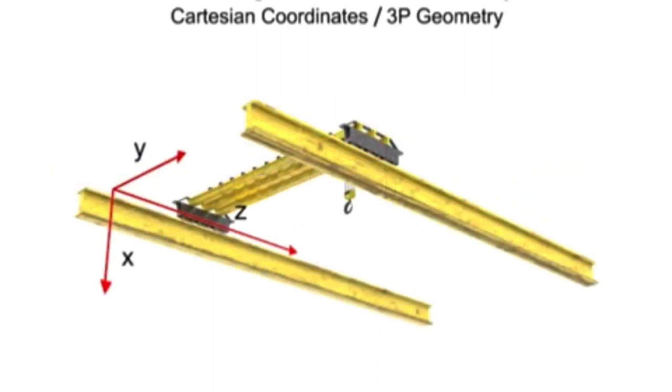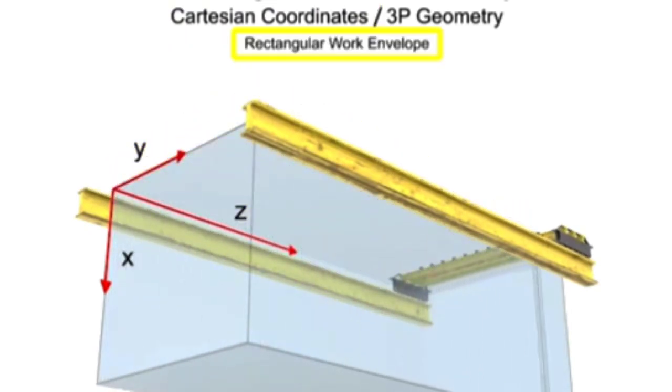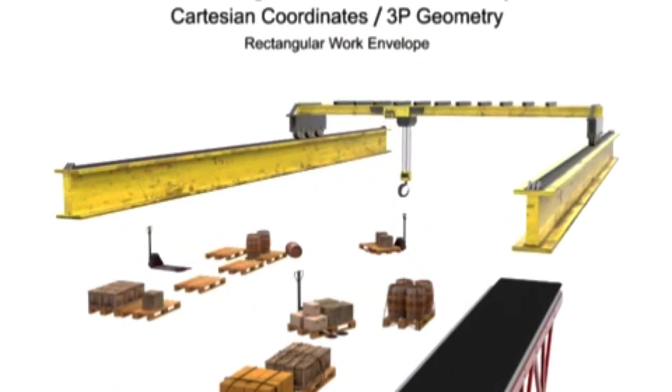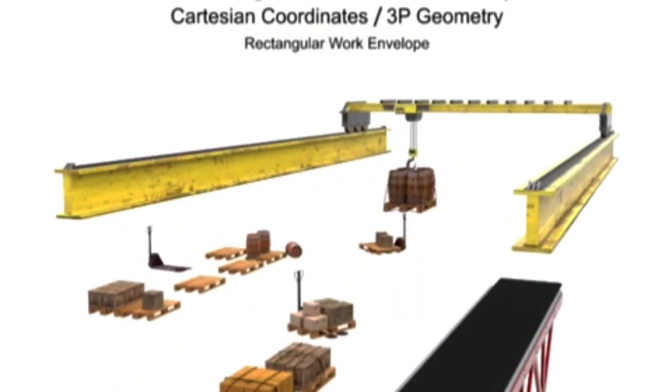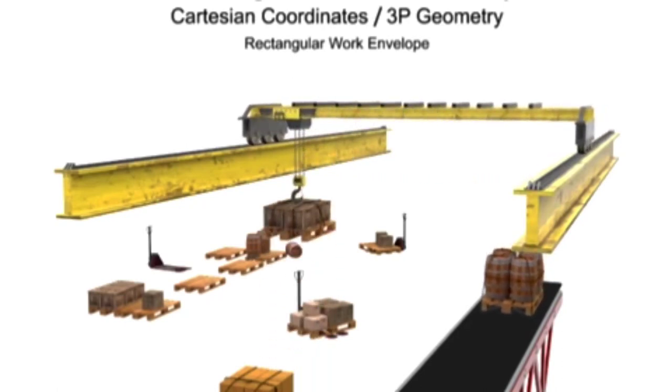Robotic arms that use Cartesian coordinate geometry generate a rectangular work envelope. Rectangular robotic arms have the simplest geometry and control system and are typically used in material handling operations.